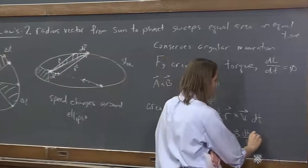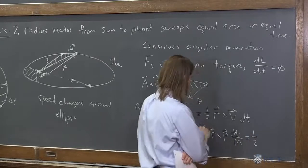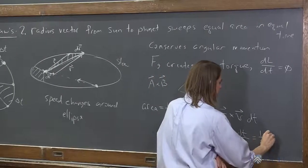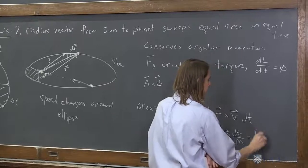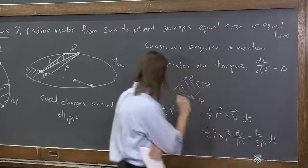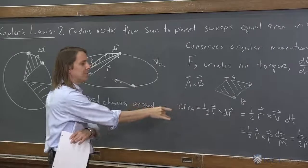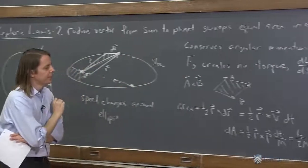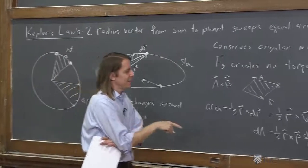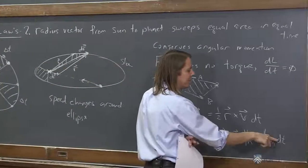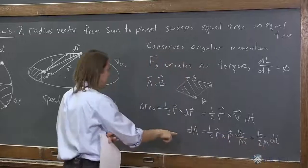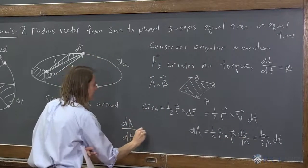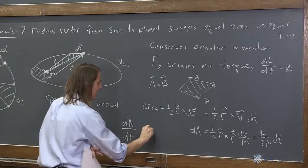So we have one half, we have an m in the bottom, we have the angular momentum up here, and we have a dt here. And this whole thing was this area that it sweeps, which we could call dA. So we have dA is the angular momentum over 2m dt. Oh, bring the dt under here. And then we get this thing that Kepler was talking about. dA dt is just L over 2m.